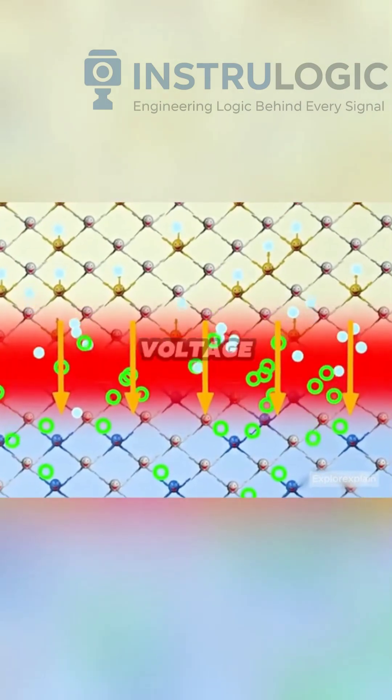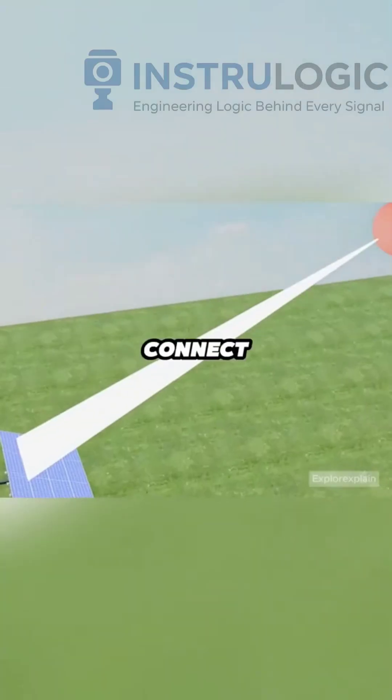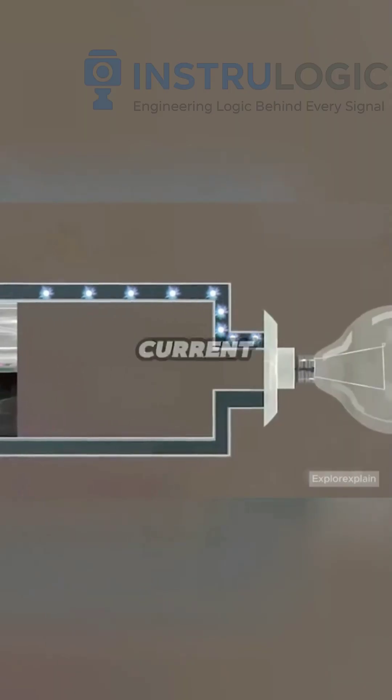As sunlight continues, voltage builds up. When we connect a wire, electrons flow from n-type to p-type, creating a current.